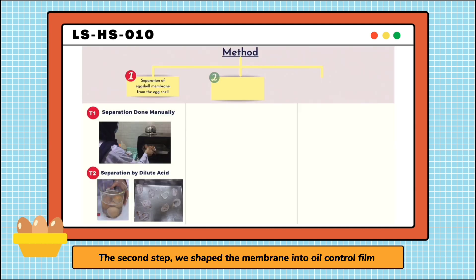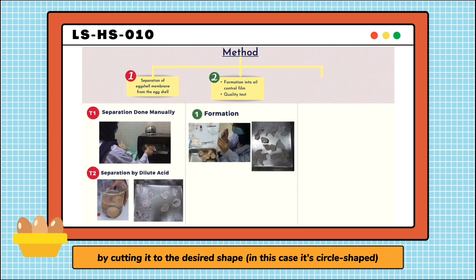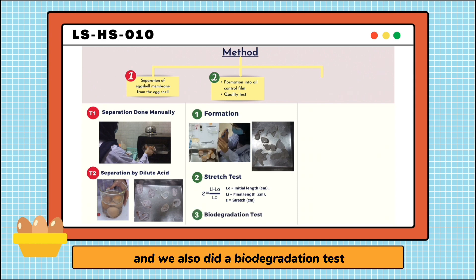The second step, we shape the membrane into oil control film by cutting it to the desired shape. In this case, it's circle-shaped. And we did two quality tests on them. We measured how far they can stretch by using this equation, and we also did a biodegradation test by submerging them underwater and observing the changes for a couple of days.